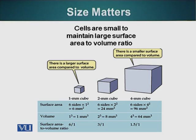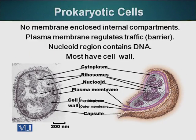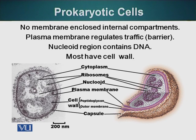Now let's move on and look at the smallest cell — the prokaryotic cell. The important feature of prokaryotic cells is that they do not have membrane-enclosed organelles. We will contrast this when we talk about the eukaryotic cell. We have seen some of them in the animation. Prokaryotic cells, like bacterial cells, do not have membrane-enclosed organelles. These cells don't even have a nucleus.